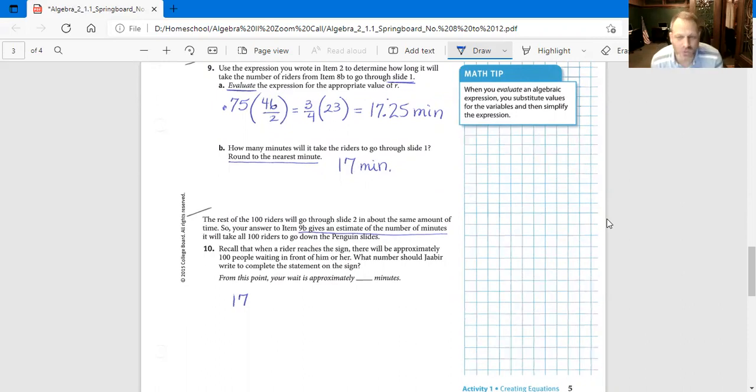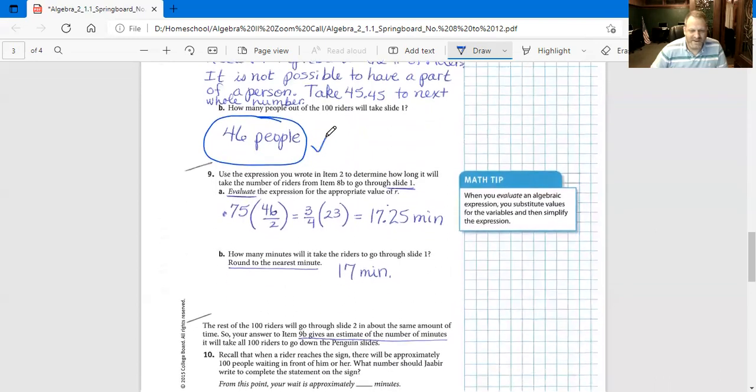Number 9: Use the expressions you wrote in item 2 to determine how long it will take the number of riders from item 8 to go through slide 1. Evaluate the expression for the appropriate value of R. So 8B, we said 46 people. Remember, way at the top in one of our first problems, we came up with this R over 2 times 0.75 for the minutes. We're going to replace that R with the 46.